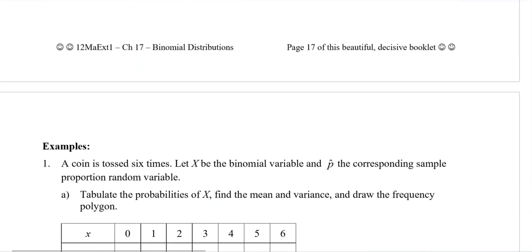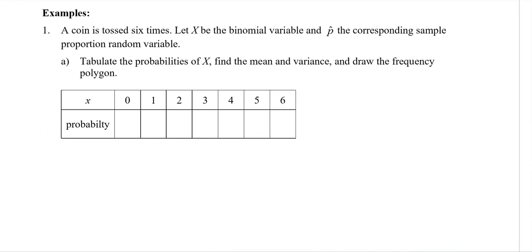That's all the theory and formulas. Question one: a coin is tossed six times. Let x be the Bernoulli variable and p-hat the corresponding sample proportion random variable. Tabulate the probabilities of x, find the mean and variance, and draw the frequency polygon. We have a coin tossed six times; the probability of success — heads — is one half.